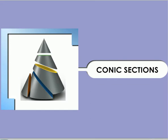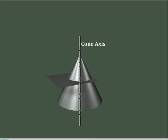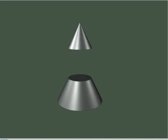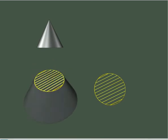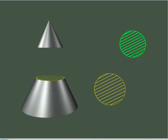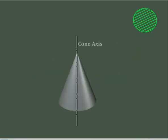Conic sections are the sections obtained by cutting a right circular cone with the help of a section plane in different positions with respect to the axis of the cone.